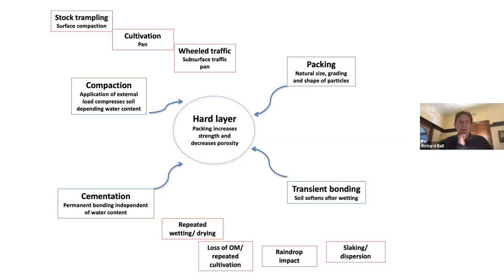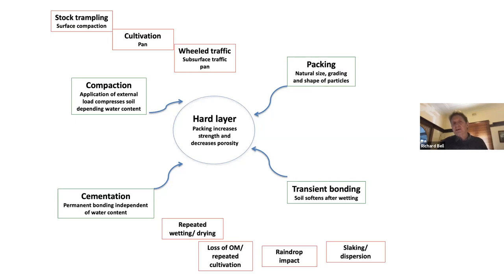Then there's compaction itself — where external load, usually the weight of machinery but also animals, compresses the soil depending on its water content. The weight of vehicles usually results in subsoil traffic pans or compaction, while cultivation can lead to plough pans. We obviously see less of that nowadays in the WA wheat belt because of no-till. Stock trampling causes more surface compaction rather than subsurface compaction. So that's a framework to put it all together under the banner of hard layers in soils.